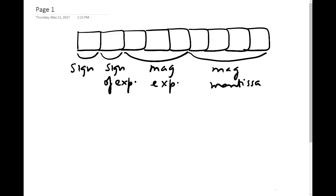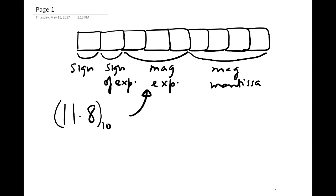What we want to be able to do is to take the number 11.8 base 10 and write it in this floating point format which follows that convention. In order to do that, the first thing we have to do is see how we can write 11 in base 2 and how we can write 0.8 in base 2.